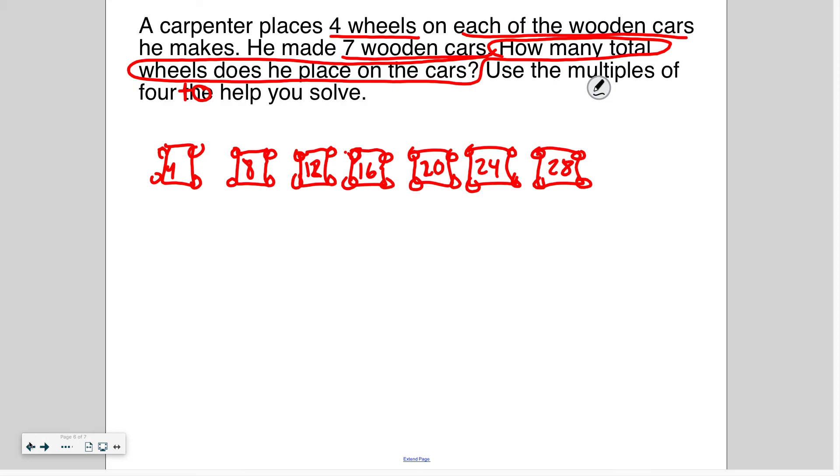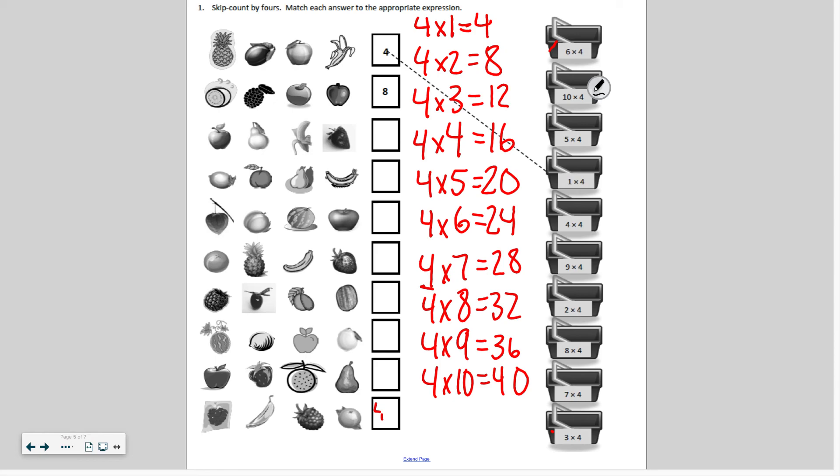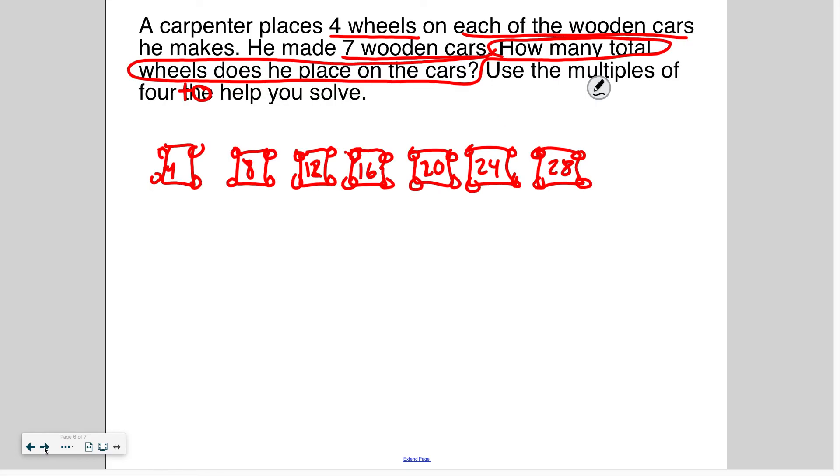If I look back, if I can double check, four times seven is twenty-eight. So I know he places twenty-eight wheels on the cars.